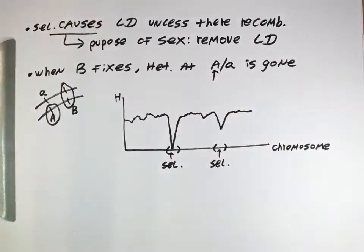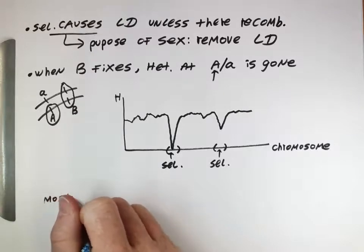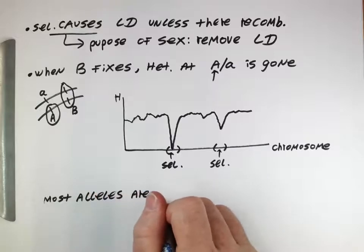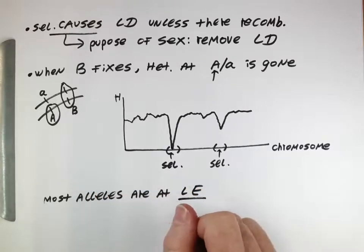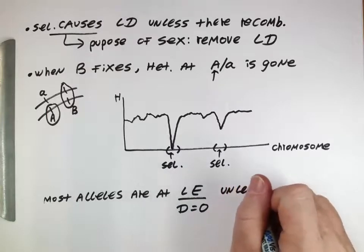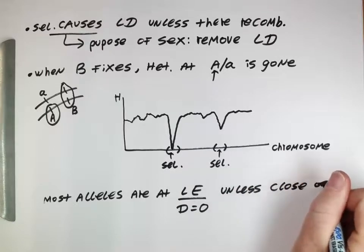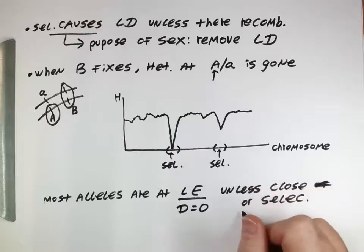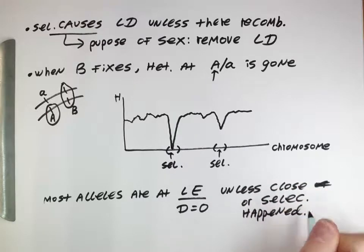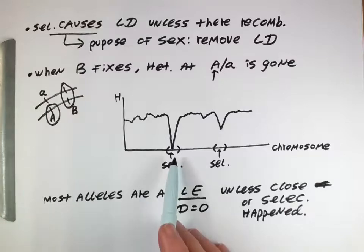Alright, so given all of this, given that linkage disequilibrium is present in certain cases, it turns out that most alleles, when we're studying traits, are at linkage equilibrium, so that's having a D of 0, unless they're very close or selection is happening or just happened. We want to keep in mind that linkage disequilibrium can arise due to drift or due to selection, but when we look across the entire genome and look at all the thousands and thousands of loci and the alleles that they have, most of those alleles are at linkage equilibrium, which means we can treat them independently. It's only special cases that are linkage disequilibrium, and then we can't treat them mathematically as easy, but they provide us with often potentially more interesting information.